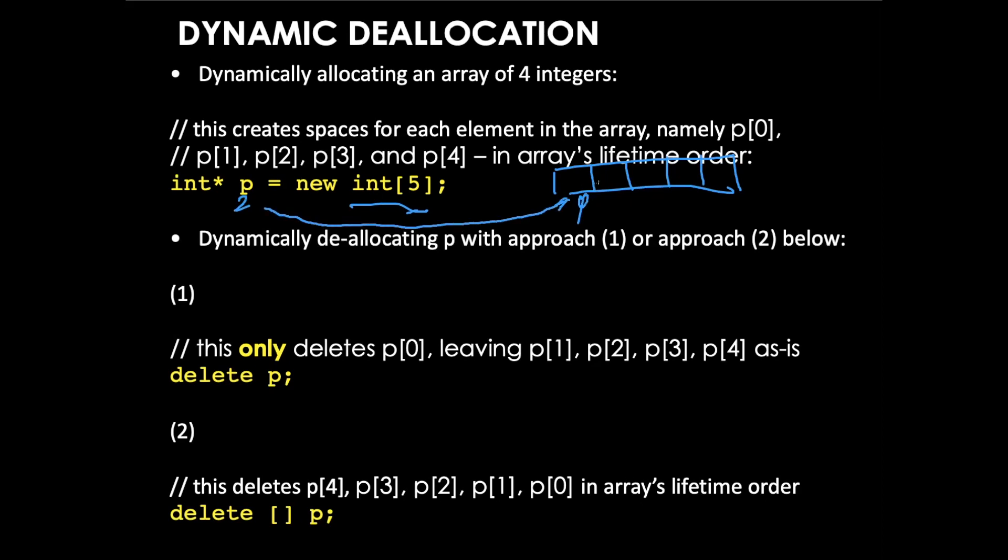When you deallocate it, you can't just do delete p, you've got to do delete bracket p. What happens is when the elements are created using new, the order of element creations happens from index zero all the way through to four.